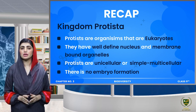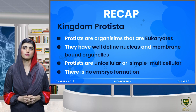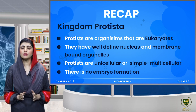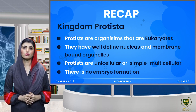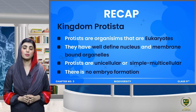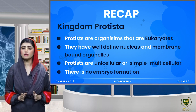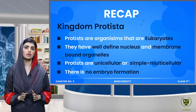Unicellular means they are made of one cell, and some protists are simple multicellular, meaning made of many cells. But if we talk about their reproductive organs...